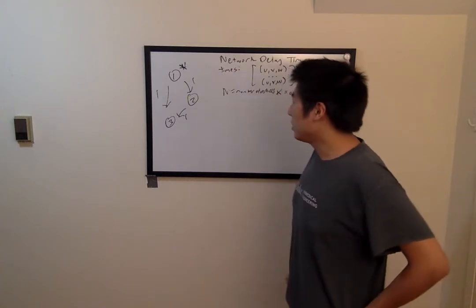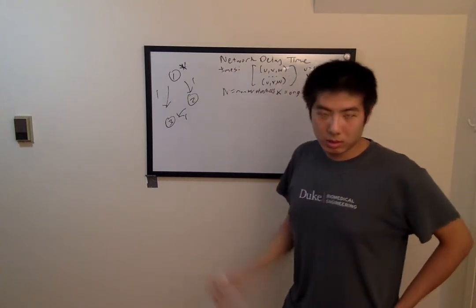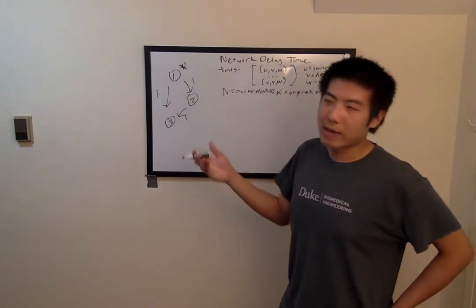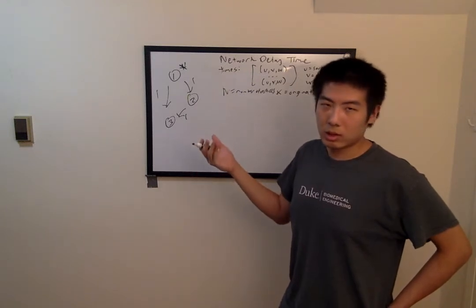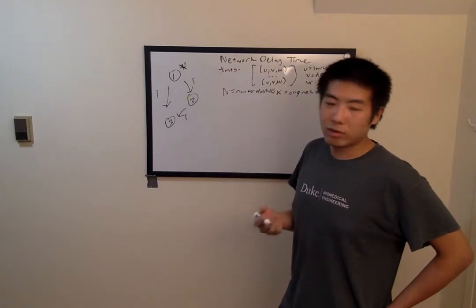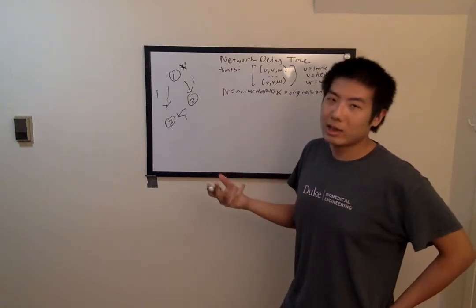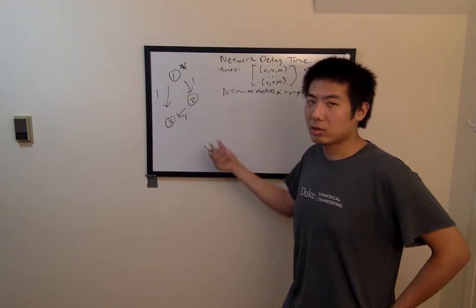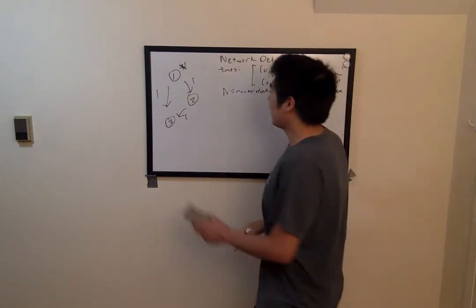then the answer would be the maximum of the shortest paths of all vertices, or minus 1 if a vertex is inaccessible. Therefore, if we have an efficient shortest path algorithm, we can also solve this question efficiently. And that brings us to Dijkstra's algorithm,